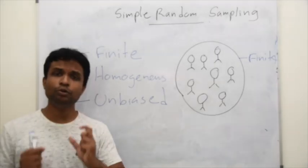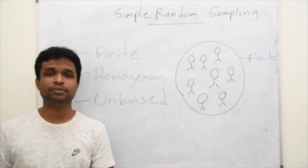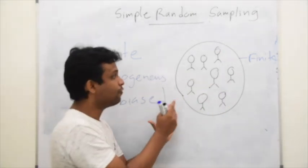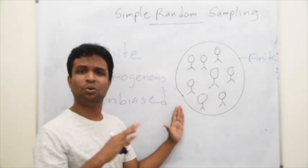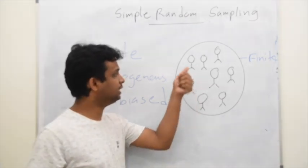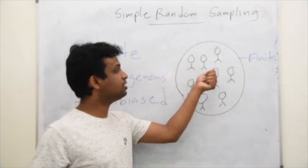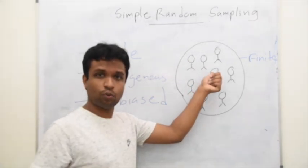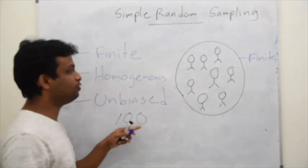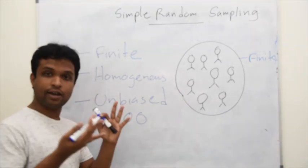So how do you perform simple random sampling? Assume that we have a finite population with homogeneous properties. All are same, so there's no problem of selecting this individual instead of this individual. Assume that we have 100 individuals in the population. We have the list.